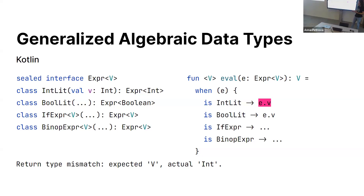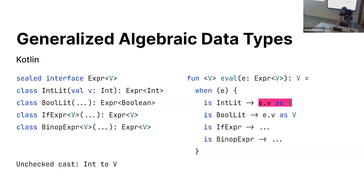It's understandable because in the context of the eval function, we do not have constraints on V, so we're not able to infer that int is a subtype of V. As we understand, the Kotlin compiler doesn't infer additional constraints from local information. And even if you specify it to the compiler using an explicit cast, it will give you a warning that the cast is unchecked because of type erasure. We do not know the actual value for type V, and we are not able to check if it's a correct cast.